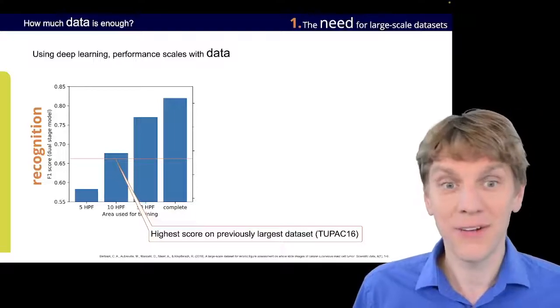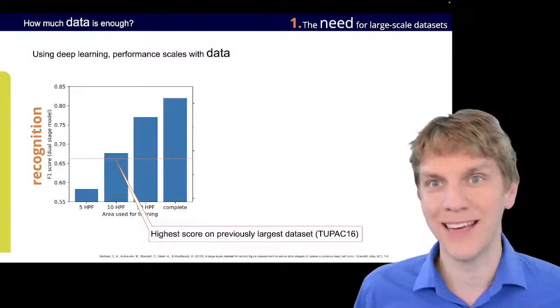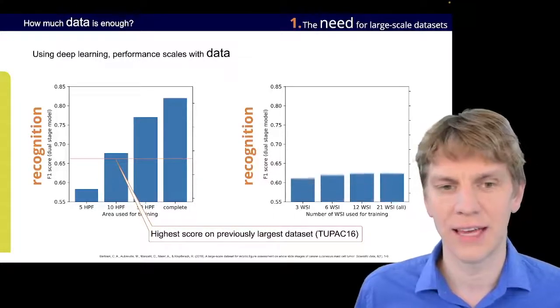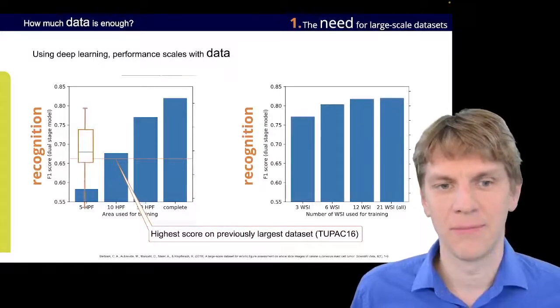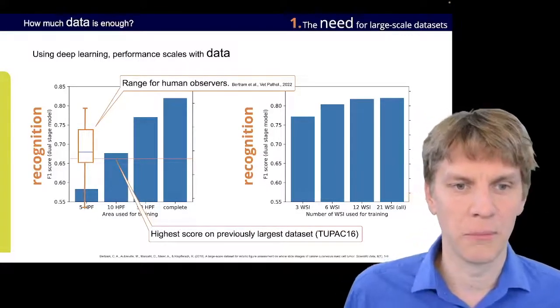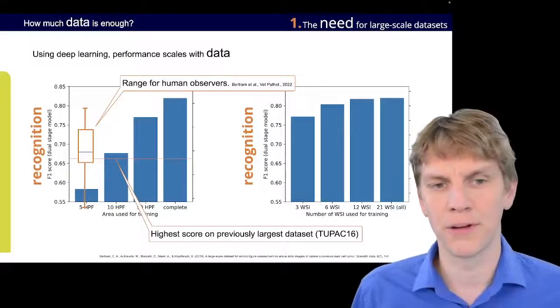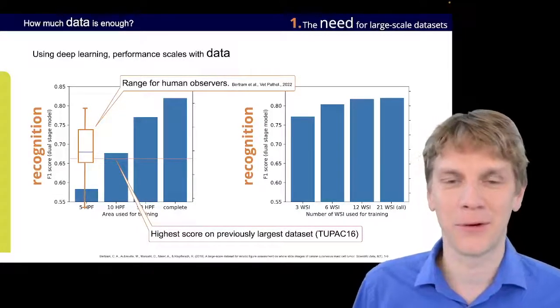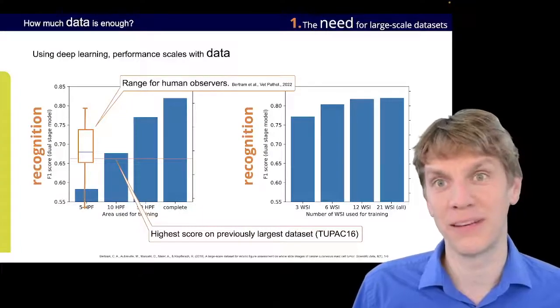So that made us very happy because, as we later found out, the human recognition performance is actually in the same range. So the human recognition performance is actually also, for good performing pathologists, also in the range of 0.8. So yes, we had some quite good job done with the big dataset here.